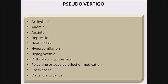Pseudovertigo — the list includes: arrhythmia, anemia, anxiety, depression, heat illness, hyperventilation, hypoglycemia, orthostatic hypotension, poisoning or medication side effects, presyncope, and visual disturbance.